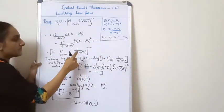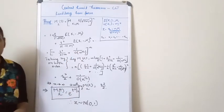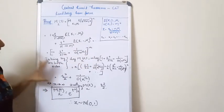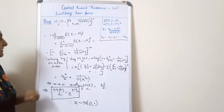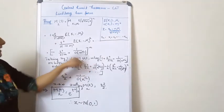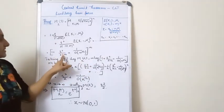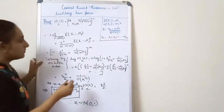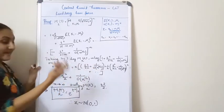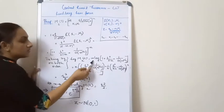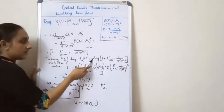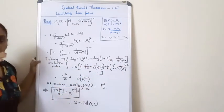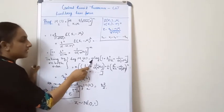Taking log on both sides: log M_t(Z) = n · log[1 + t²/(2n) + O(n^{-3/2})]. Applying the log property log(1 + x) ≈ x - x²/2 + ..., where x = t²/(2n) + higher order terms, and then n · [x + (1/2)x² + ...].